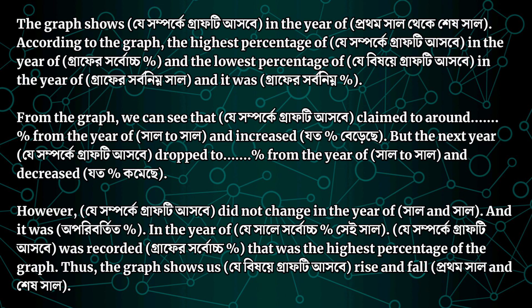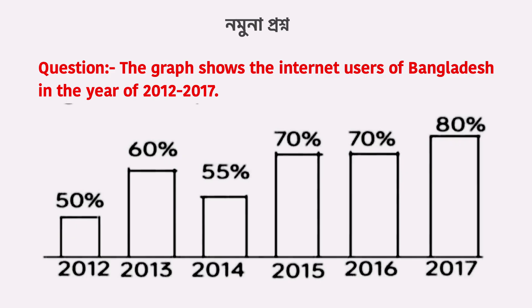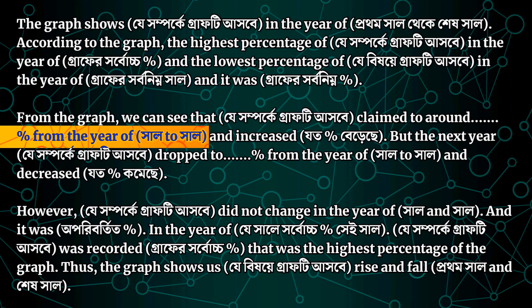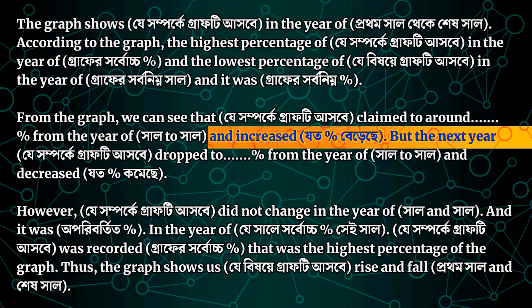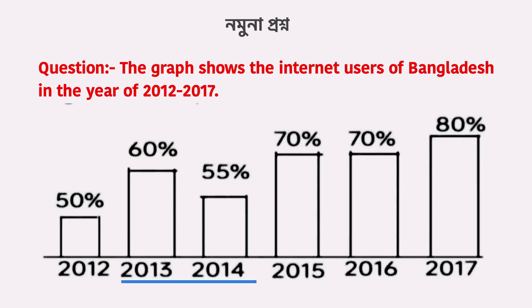From the graph we can see that the percentage climbed to around 12%. The number increased — climb to, or increase to. The number dropped — drop to, or decrease to. From the year 2012 to 2013 it increased, but the next year the number dropped to a lower percentage.